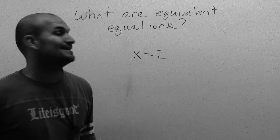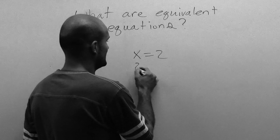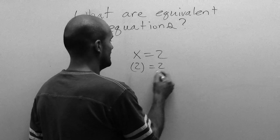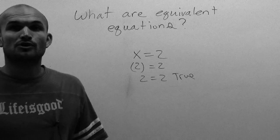This one's pretty easy, right? The value of x that's going to make this true is 2, because when I put in a 2 for x, I get 2 equals 2, which is true.